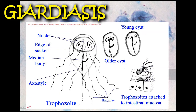The cyst is the inactive, non-motile, and non-invading stage of the parasite, responsible for the transmission of the disease to others through the fecal-oral route. Cysts are ellipsoidal and usually contain two or four nuclei, and the axostyle and even the flagella can sometimes be seen inside the cyst.